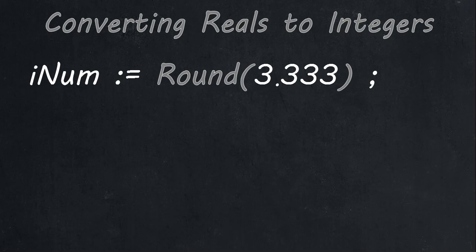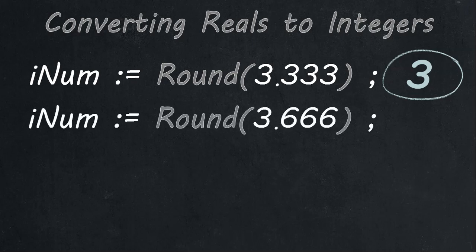We can round the number — there's a round function. You say round in brackets and give the value you want to round as an argument, and that will return an integer value. Those of you who've forgotten how round works: you look at the number after the decimal point. If it's 4 or less, it keeps the front number and gets rid of the decimal, so it rounds down. But if the value after the decimal is 5 or more, it rounds up to the nearest integer.